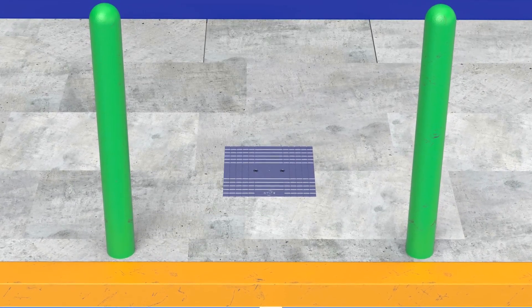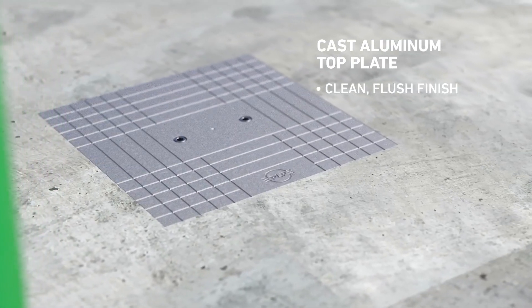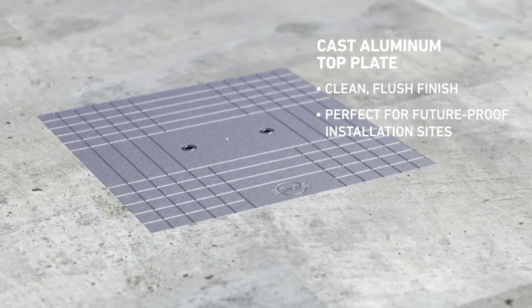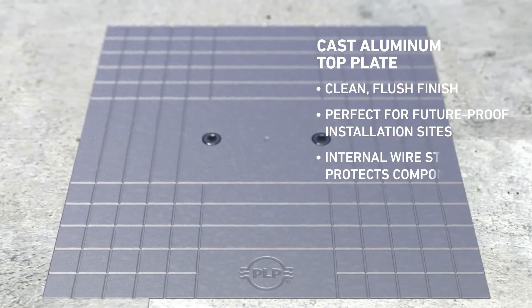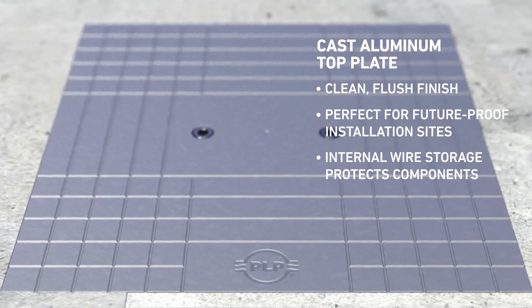The cast aluminum top plate provides a clean, flush finish with tread control, perfect for future-proofed installation sites, and internal wire storage protects components until the charging station is installed.